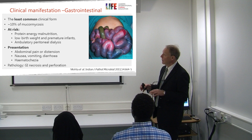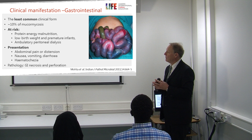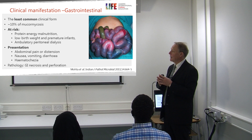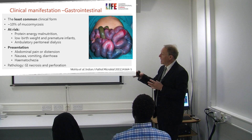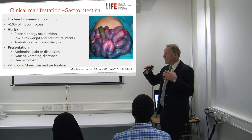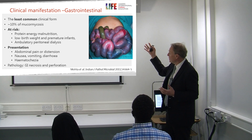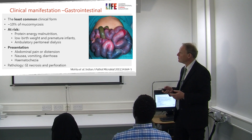Gastrointestinal mucormycosis accounts for about 10 percent of cases, occurring in malnourished children, low birth weight infants, rarely as a cause of CAPD peritoneal dialysis infection, and in ketoacidotic patients. Presentation includes abdominal pain, distension, nausea, vomiting, diarrhea, and blood in the stool. At surgery, extensive necrotic bowel - small or large - requires wide resection. Most of these patients do not survive because diagnosis is typically very late in the course of disease.